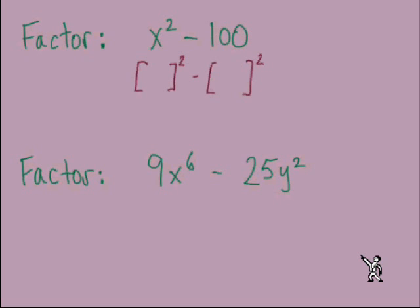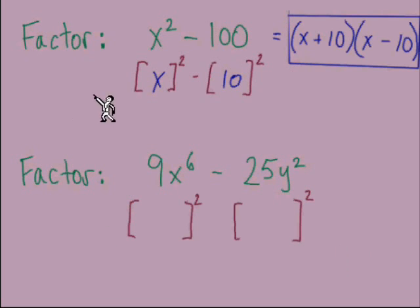Okay, this first problem, we've got two terms, both terms are squares. So the first box is x, x to the second power, and the second box is 10 to the second power. x to the second power and 10 to the second power equals this x squared minus 100. Once we have those boxes filled in, we know that each set of parentheses starts with x and ends with 10, one gets plus and one gets a minus.